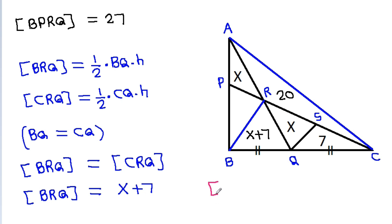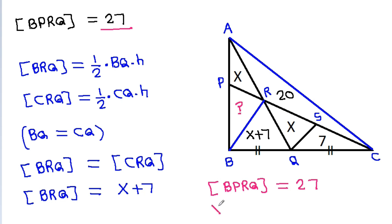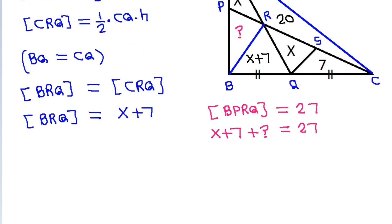And we have area of BRQ is X plus 7, plus the question mark, equals 27. So the question mark will be 20 minus X.